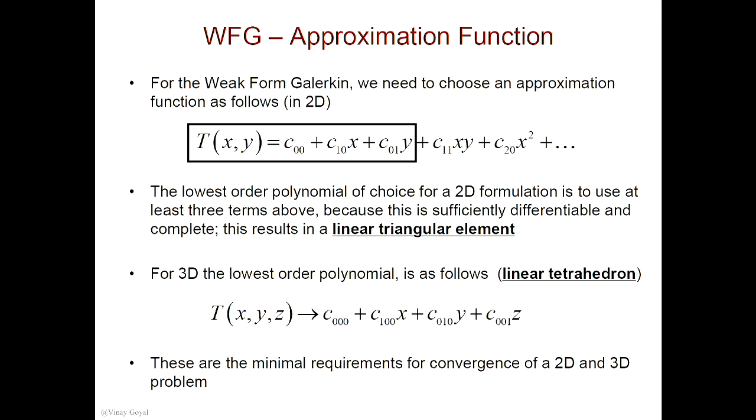But instead of tackling a 3D problem, I'll keep tackling the 2D, because 3D is an extension of 2D. So we covered what are the requirements for convergence for the approximation function we're selecting. Normally in weak form Galerkin, you will have gone in and created your basis functions to make sure these basis functions satisfy the essential boundary conditions. You insert that into the weak form Galerkin, turn the crank, and solve for the unknown coefficients, the c's.